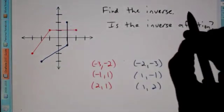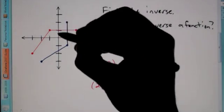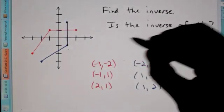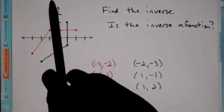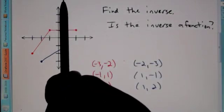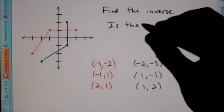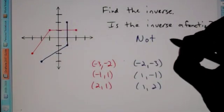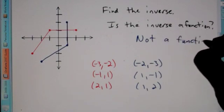It also says: is the inverse a function? Well, if you're ever given a graph in which any part of it is vertical, this would not be a function because it does not pass the vertical line test. It's touching my pen at an infinite number of points. So therefore, for this problem, the inverse is not a function.